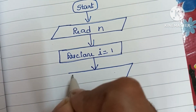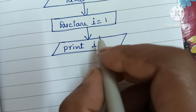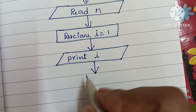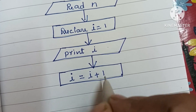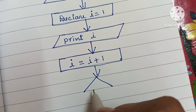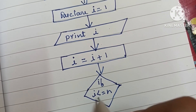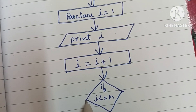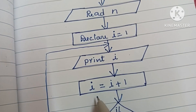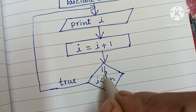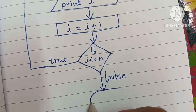Next we print the value of i — output is written within a parallelogram shape. Then we increase the value of i: i = i + 1, which is an operation written within a rectangular shape. Next we check if i is less than or equal to N — the condition is written within a diamond shape. If true, we loop back; if false, we stop the flowchart using a STOP statement.